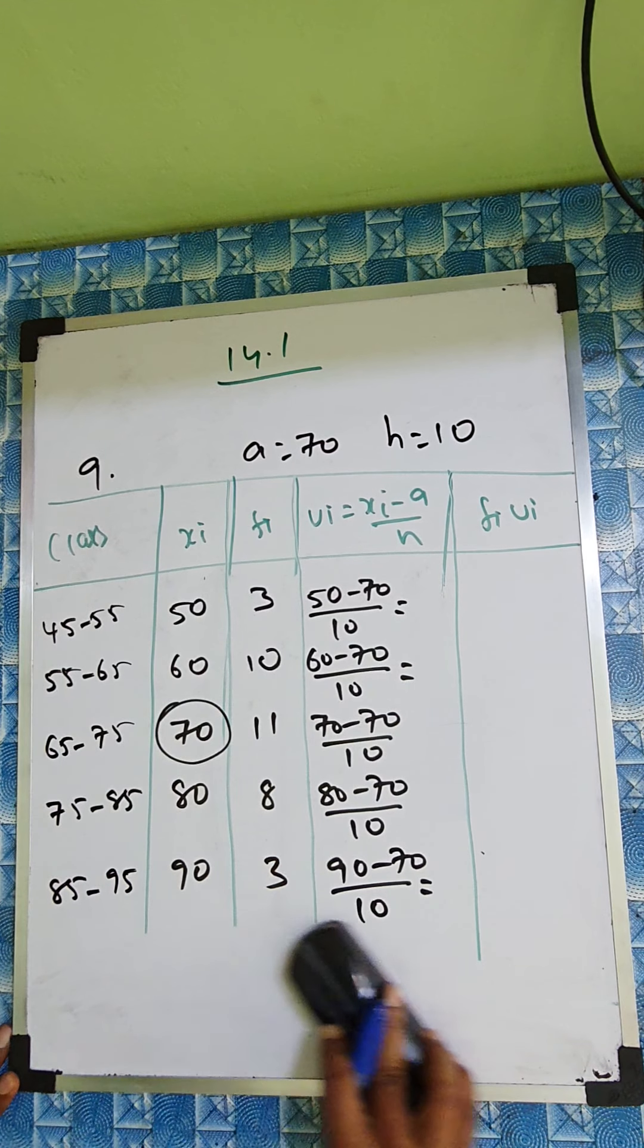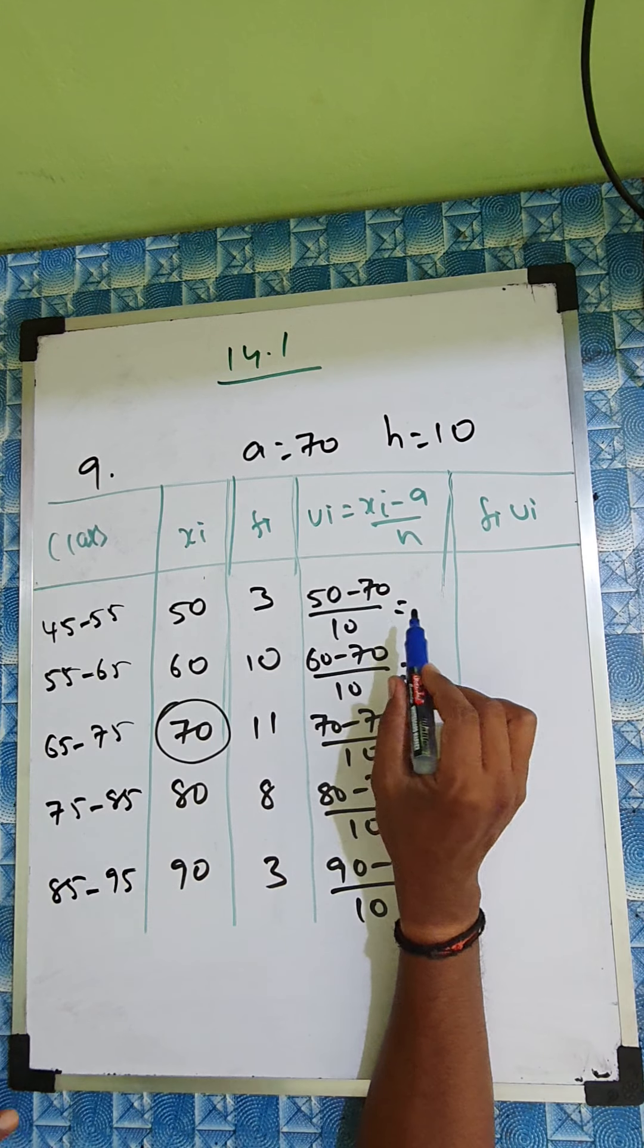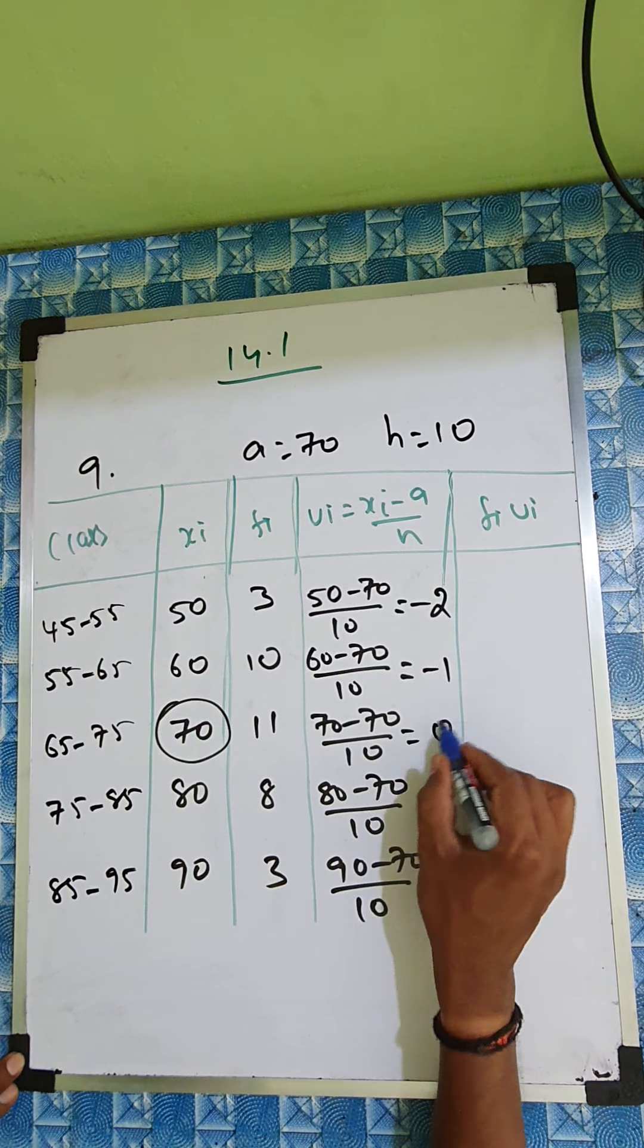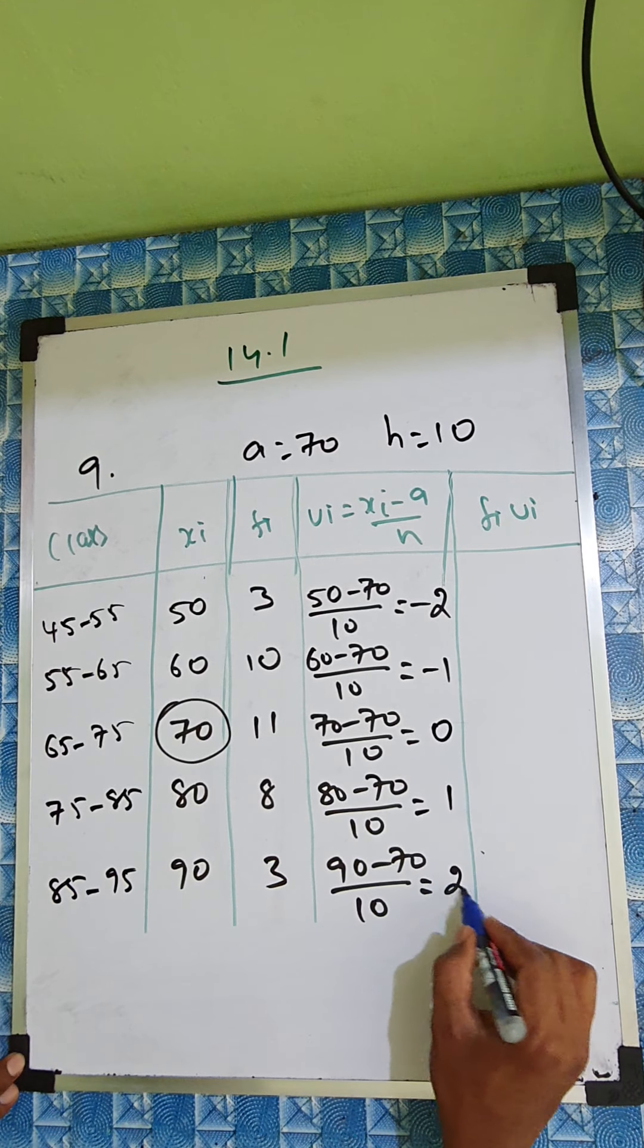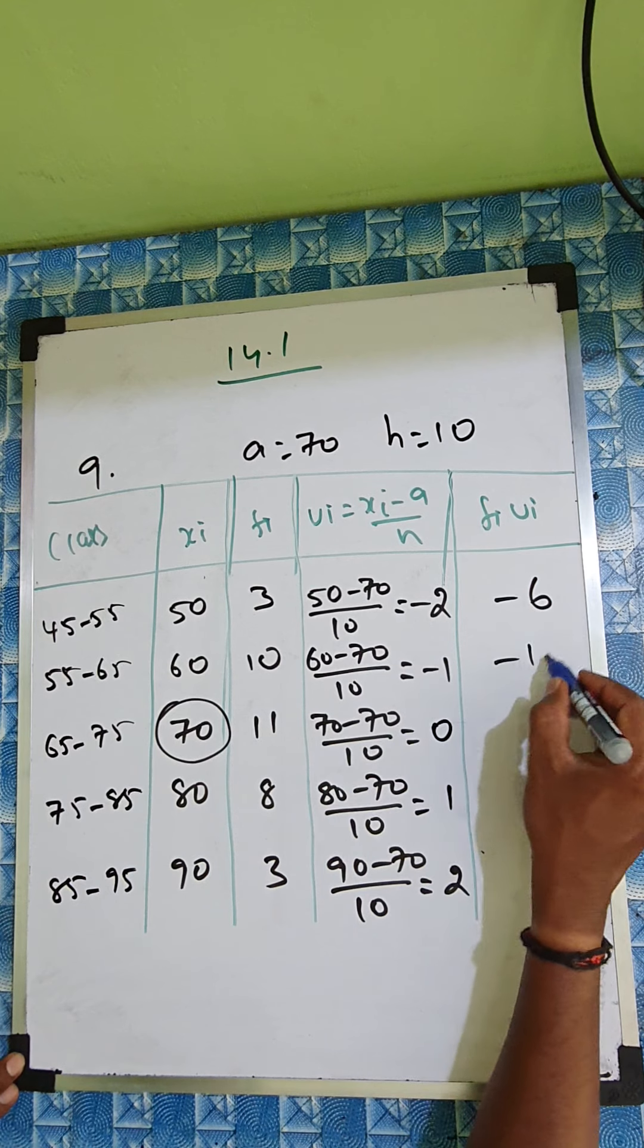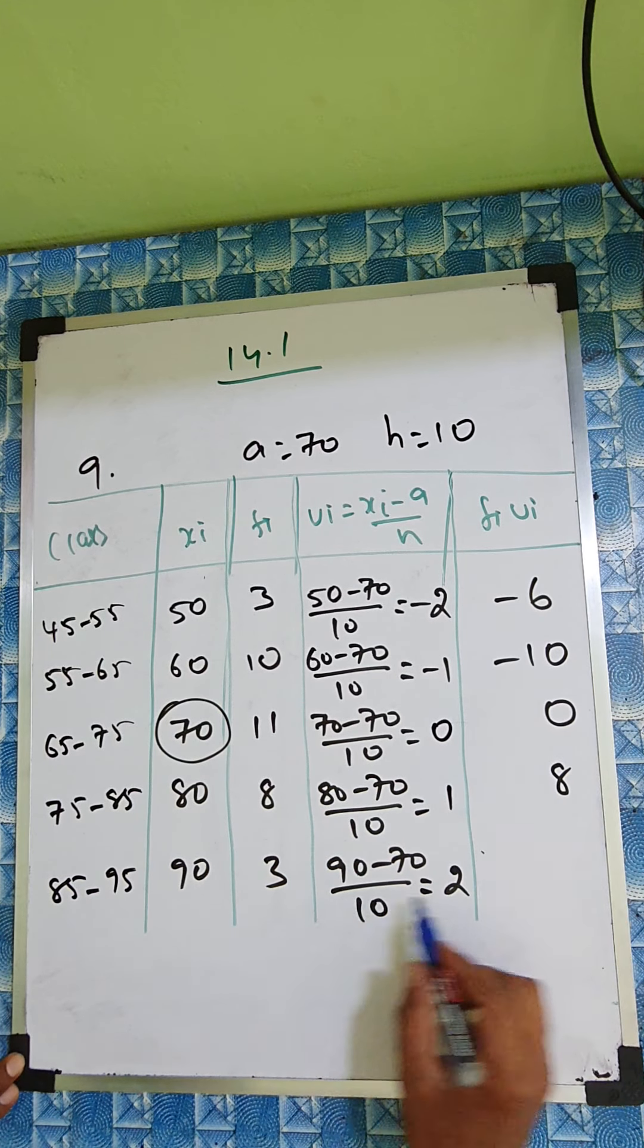So we can write now here. 50 minus 70 is minus 20. Minus 20 divided by 10 is minus 2. And minus 1, 0, 1, 2. It will come easily. After again multiply: minus 6, minus 10, 0, 8, and 6.